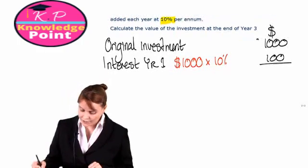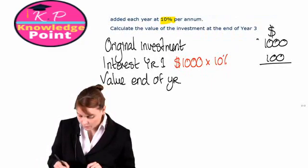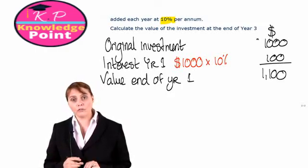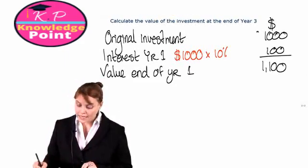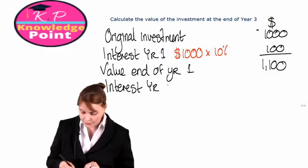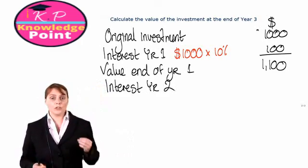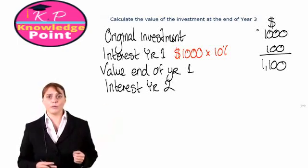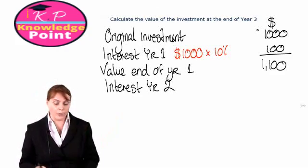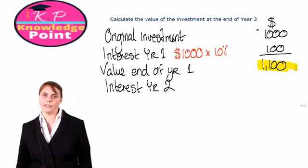So at the end of year one the value of our investment is one thousand one hundred dollars. Now we need to add on the interest earned in year two. When we are applying compound interest, we don't just calculate the interest based on the original investment.